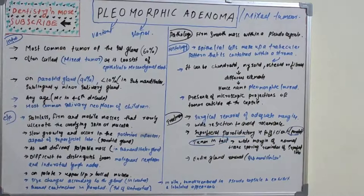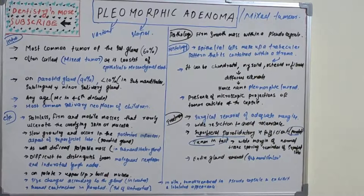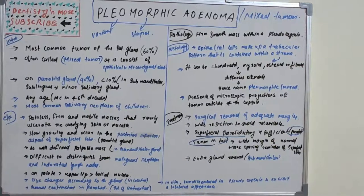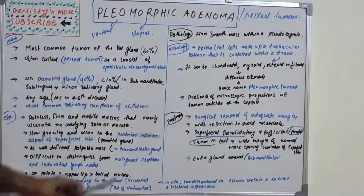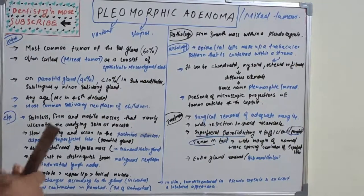The name itself gives a clue about this tumor. Studying how a tumor got its name helps connect and remember its features. In summary, pleomorphic adenoma is the most common tumor of salivary glands, the most common salivary neoplasm of children, most commonly seen in the parotid gland, and named for its various elements — chondroid, myxoid, osteoid, or fibroid.